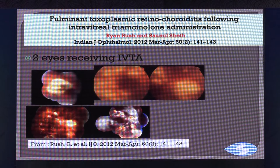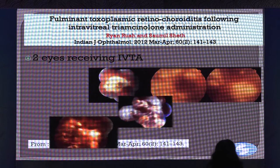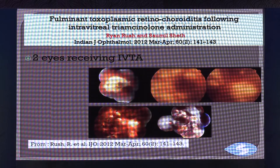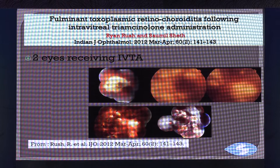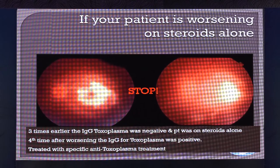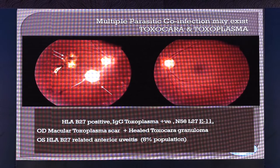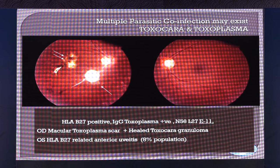Two cases of fulminant toxoplasmosis have been reported where intravitreal triamcinolone acetonide was given alone — published in IJO. As was mentioned earlier, CMV can occur after intravitreal triamcinolone. Similarly, you can have fulminant toxoplasmic endophthalmitis after this. If your patient is worsening on steroids alone, think about toxoplasmosis. Because it is a congenital infection, you can have a combination — toxocara and toxoplasma in the same patient.